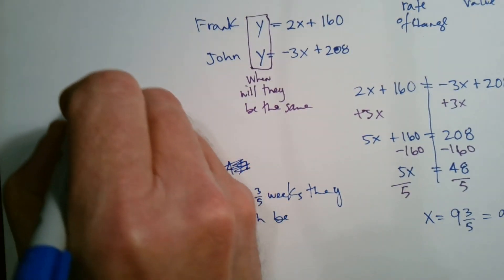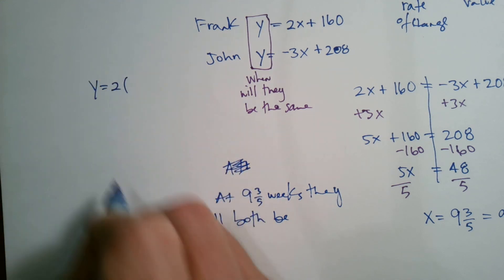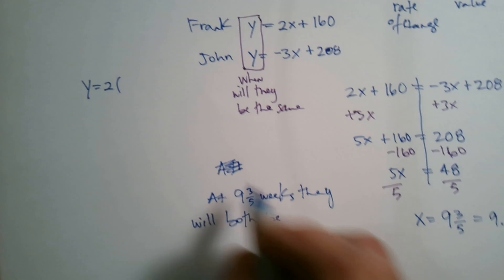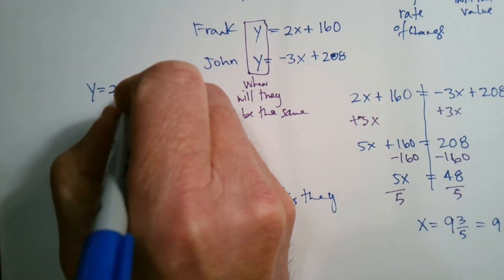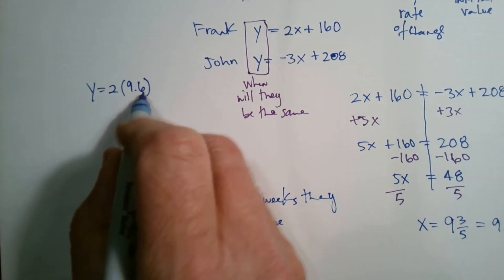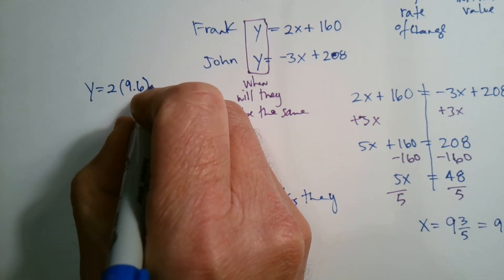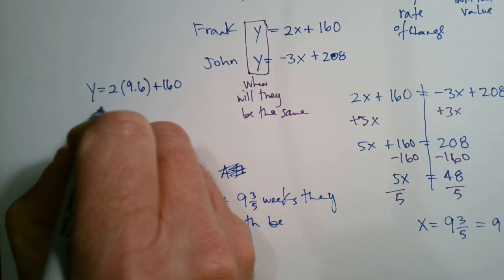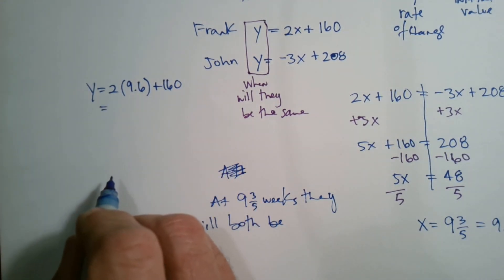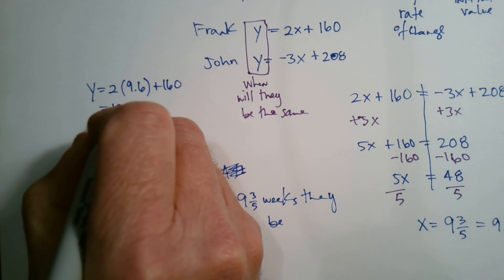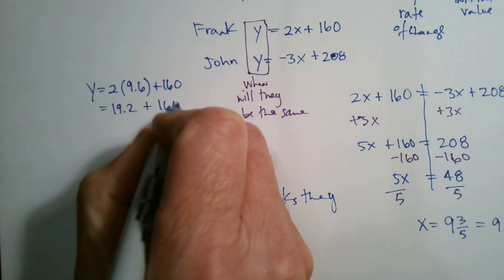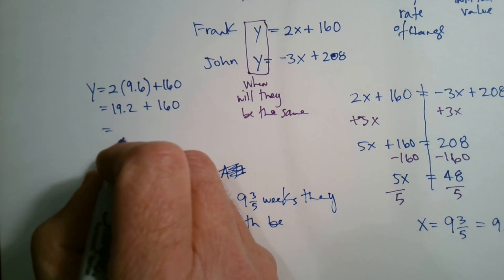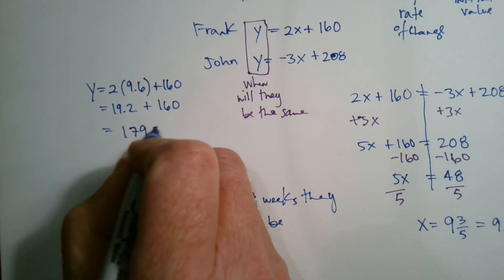So what I would do is I would say, to figure out what that is, Y is equal to two times, and I've got to either put in nine and three fifths or nine point six. I'm going to put it in decimal this time. So it's going to be two times nine point six plus 160. So that gives me two times that is, let's see, 18, 19.2 plus 160.